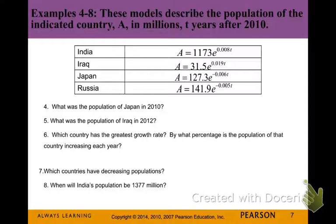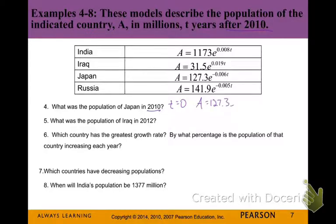Examples 4 through 8: These models describe the population of the indicated country A in millions, T years after 2010. We've got India, Iraq, Japan, and Russia. India and Iraq have a growth situation because their k values are positive. Japan and Russia have a decay situation because of their negative k values. For Example 4, the population of Japan in 2010 — that's our starting date, so T equals 0 — is simply the beginning amount: 127.3 million.